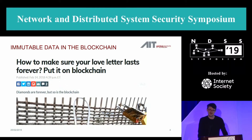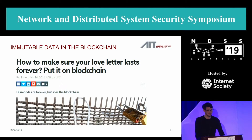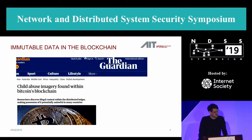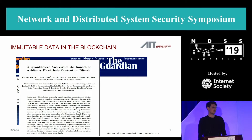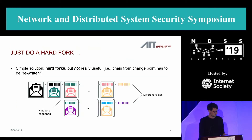Of course, this can be done in a positive way too — for example, making your love letters last forever by putting them on the blockchain, as was published on Valentine's Day 2018. But unfortunately, a lot of abuse imagery has been found. A Guardian report identified such content on the Bitcoin blockchain, and research published at Financial Crypto last year also found content on the Bitcoin blockchain that can get you into legal trouble. One simple solution is to do a hard fork, but we argue that it's not really useful.